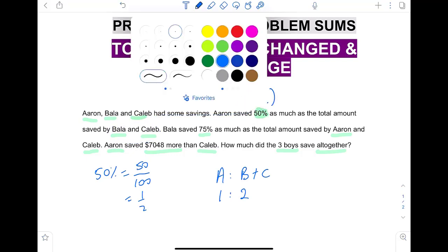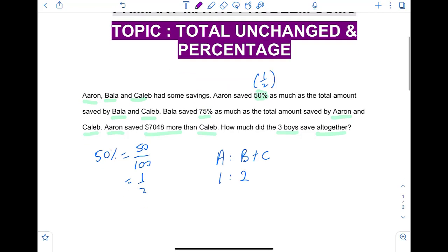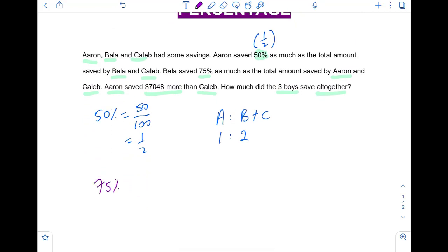Next step, Bala saved 75% as much as the total amount saved by Aaron and Caleb. Same thing. We change the 75% into a fraction. 3 quarters. Divide by 25, divide by 25, we get 3 quarters, which means that we replace the 75% with 3 quarters. Bala saved 3 quarters as much as Aaron and Caleb. So, Bala will take on 3. Aaron and Caleb will take on 4.